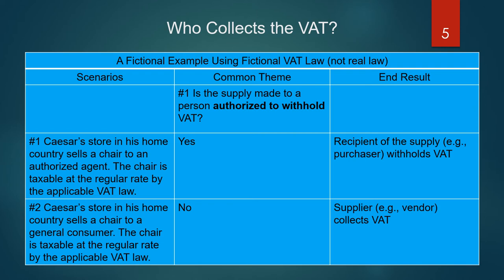Scenario number two: Caesar's store in his home country sells a chair to a general consumer. The chair is taxable at the regular rate by the applicable VAT law. In this case, the supply is not made to an authorized agent, and therefore Caesar will collect the VAT and report and remit it on his return.